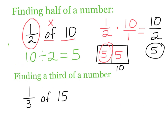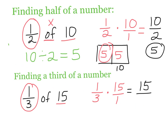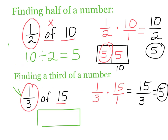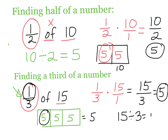Finding a third of a number works the same way. I'm finding a part of 15, so I do 1 third times 15, putting a 1 underneath. Straight across: 1 times 15 is 15, and 3 times 1 is 3. Then 15 divided by 3 is 5. You could also draw a picture: the whole thing is 15 split into thirds. 15 divided by 3 is 5 per section, and I just want 1 of the thirds — so that equals 5. Taking 1 third of a number is the same as dividing by 3.